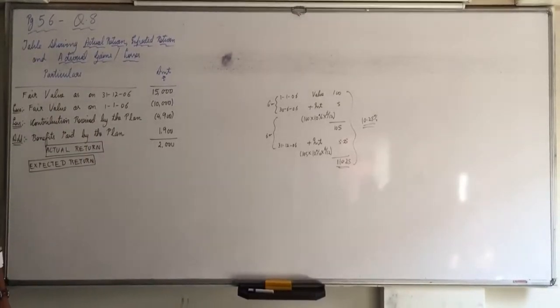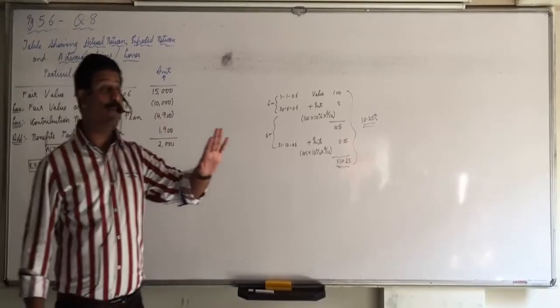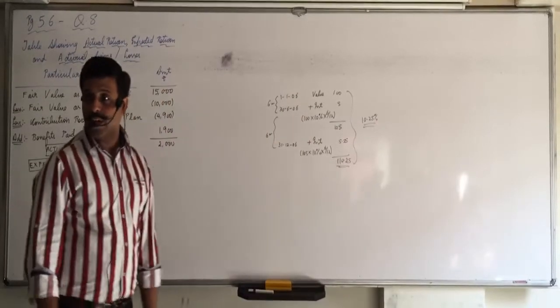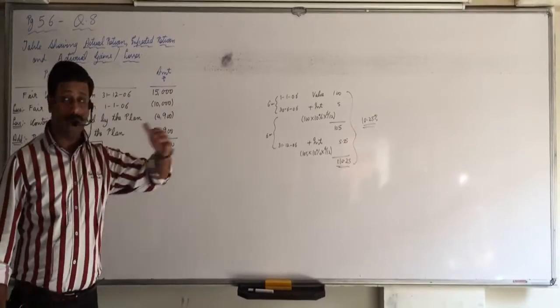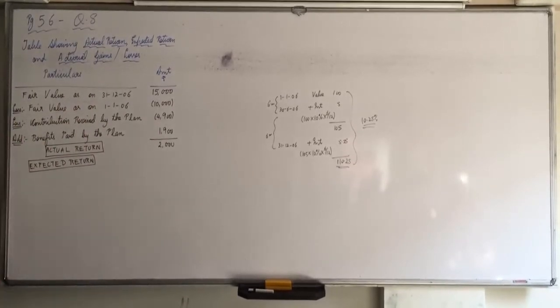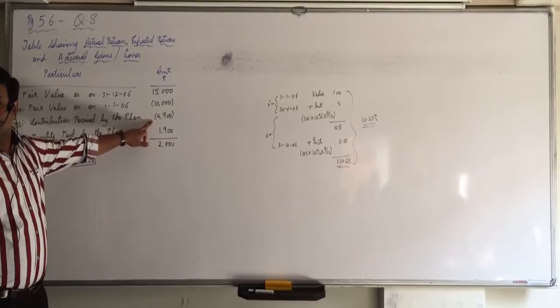So how do we find the expected return? How much did we invest? How much was the value in the beginning of the year? 10,000. On that we will receive 10.25% for full year. Is it or not? On 10,000 we will receive 10.25% for full year. Now on 30th June, can you see that maybe second sentence? On 30th June, further we invested 4900 but we also received.